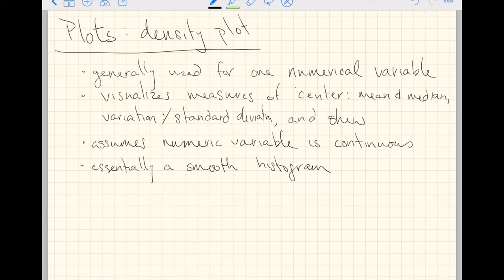The difference between a density plot and a histogram is that the density plot assumes the numeric variable is continuous. For any interval within the values you have, the variable could theoretically take on any value within that interval, so it's not confined to discrete values.